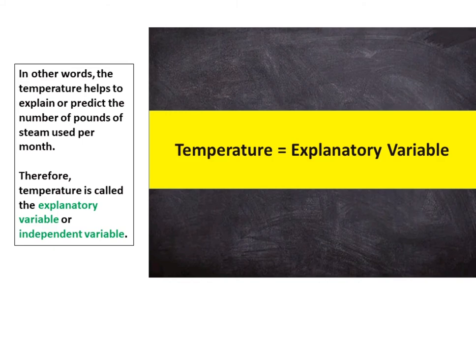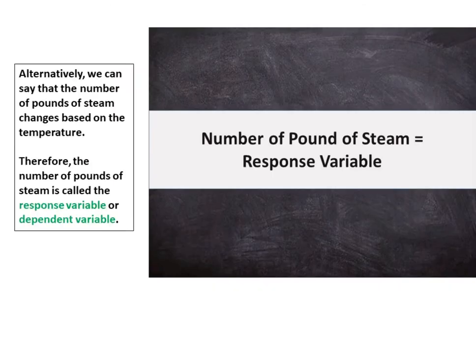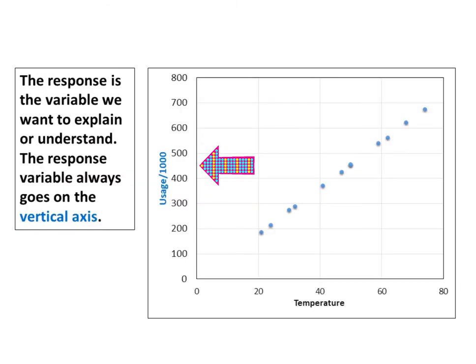Therefore, temperature is called the explanatory variable or independent variable. We typically plot the explanatory variable on the horizontal axis. Alternatively, we can say that the number of pounds of steam changes based on the temperature. Therefore, the number of pounds of steam is called the response variable or dependent variable. The response is the variable we want to explain or understand. The response variable always goes on the vertical axis.